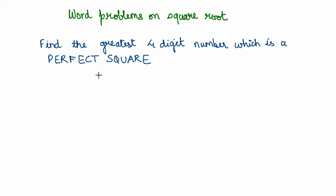Let's look at another interesting word problem using square roots. This problem asks us to find the greatest four-digit number which is a perfect square.